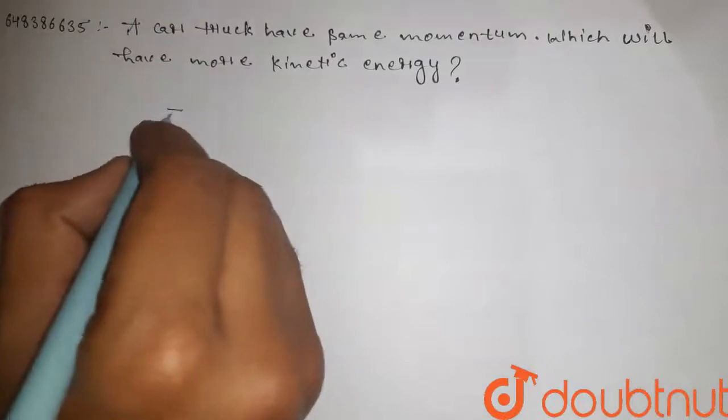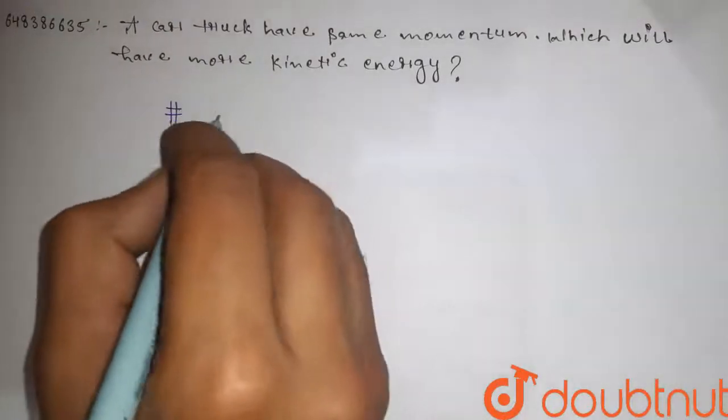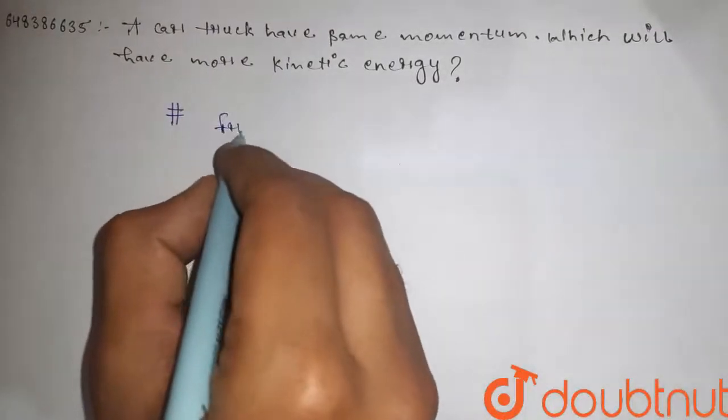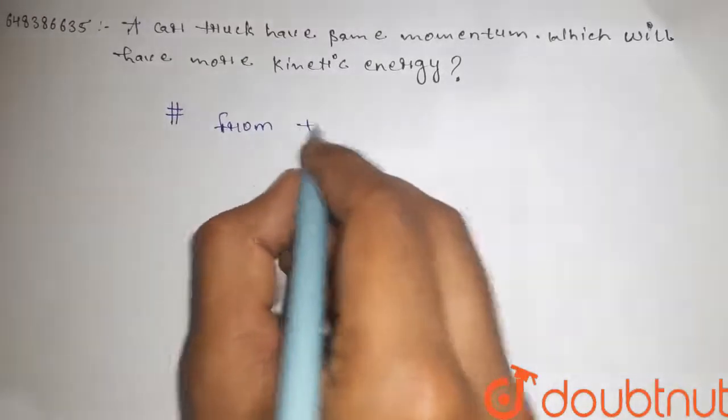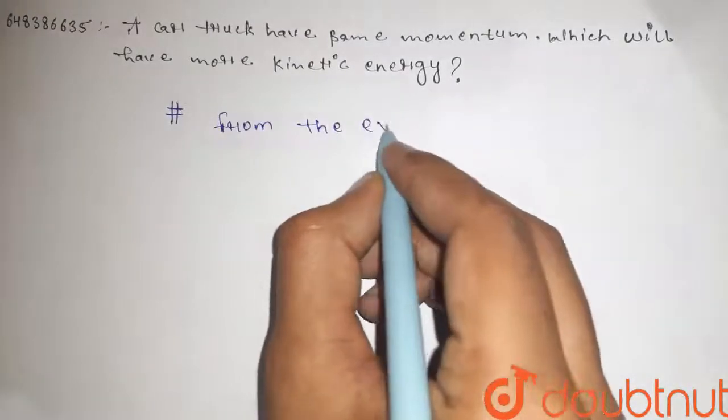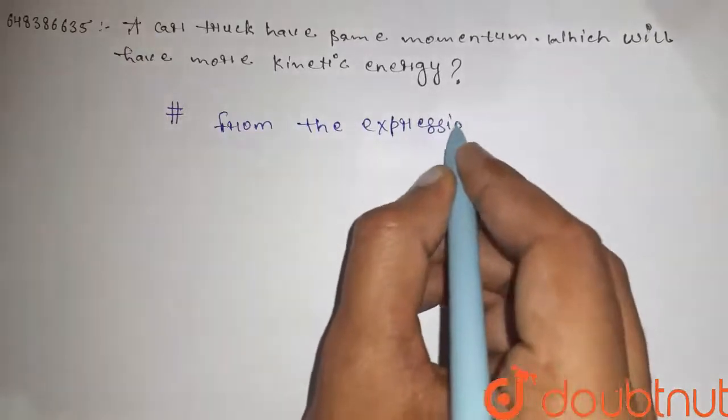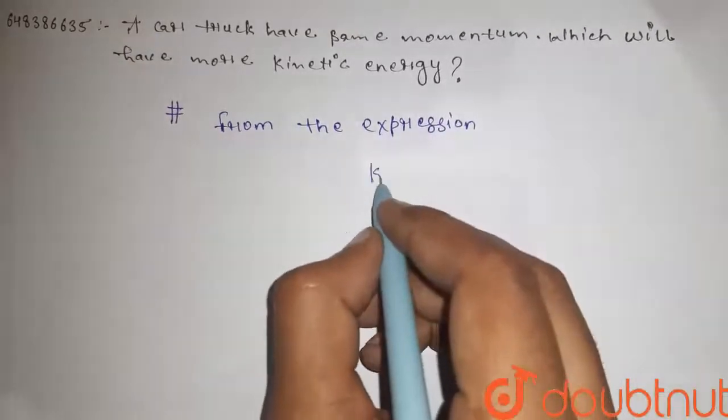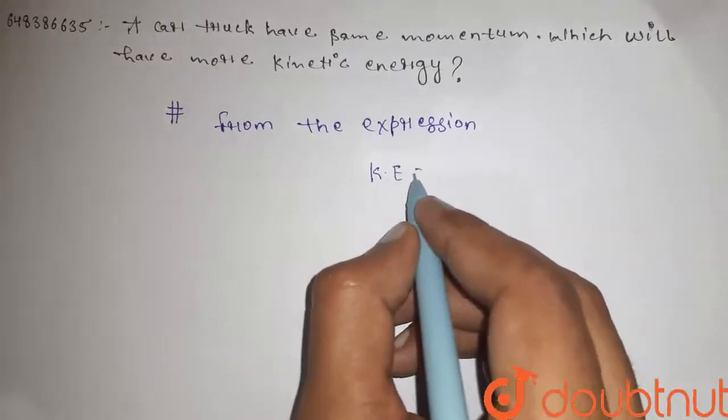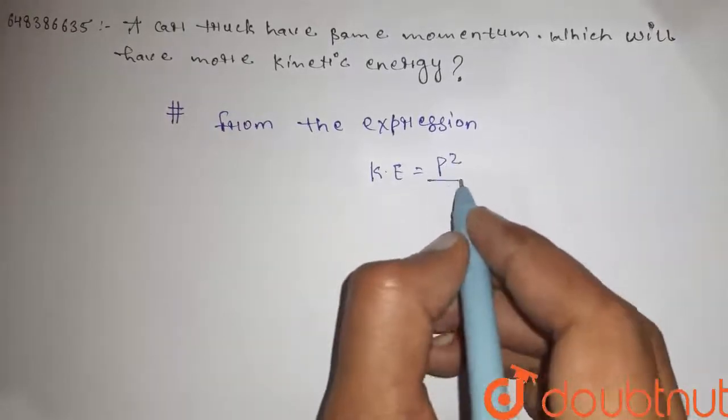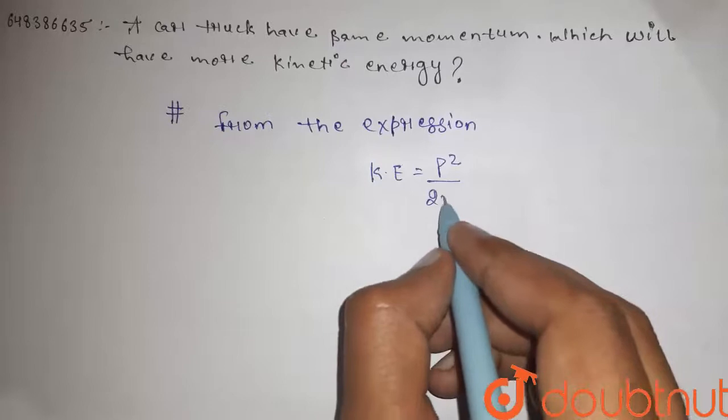This question is quite simple. We know that from the expression, the relation between kinetic energy and momentum is kinetic energy is equal to p square divided by 2m.